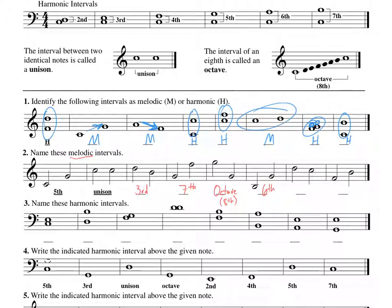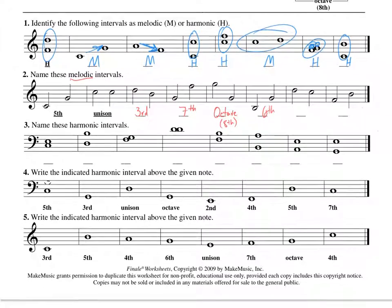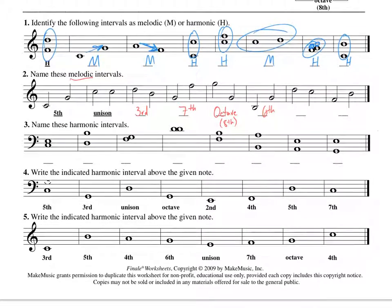I want you to do the last two on your own. I'm going to move on to number three. If you need to, you can pause the video to catch up. Number three: name these harmonic intervals — harmonic meaning they're stacked on top of each other and play at the same time. So we're going to count C, D, E — there are three notes there between C and E, so that is a third.